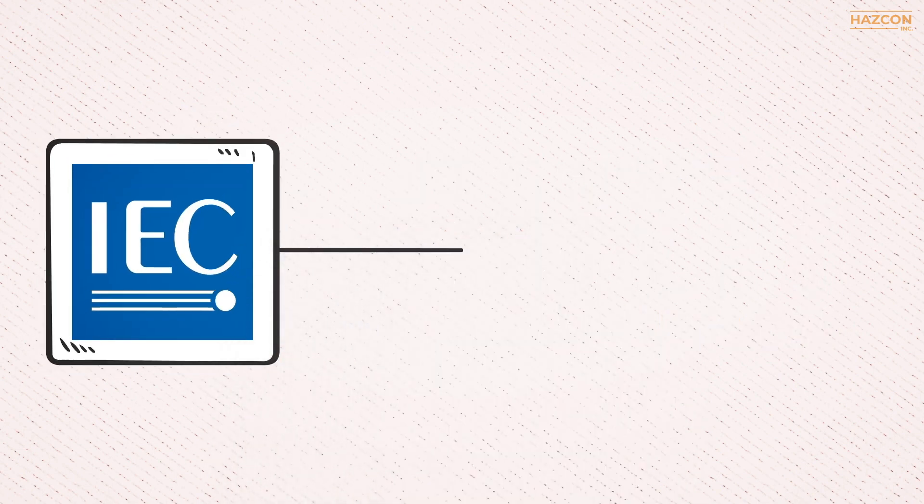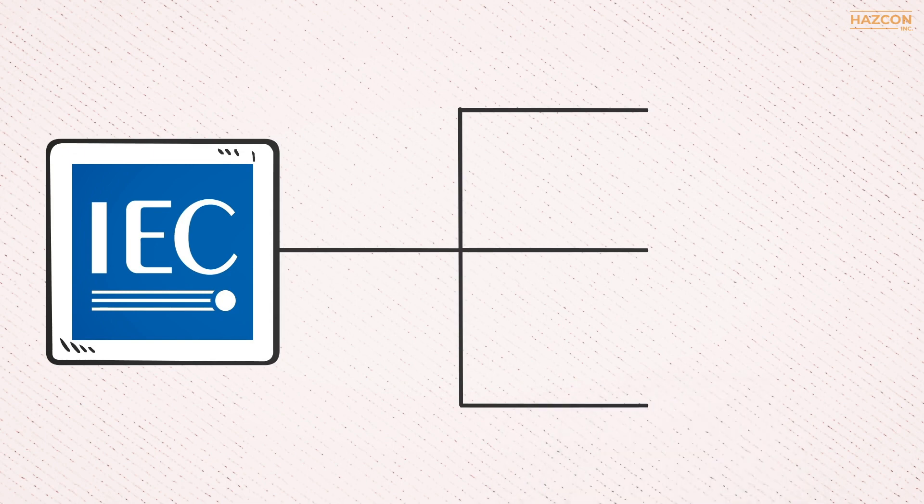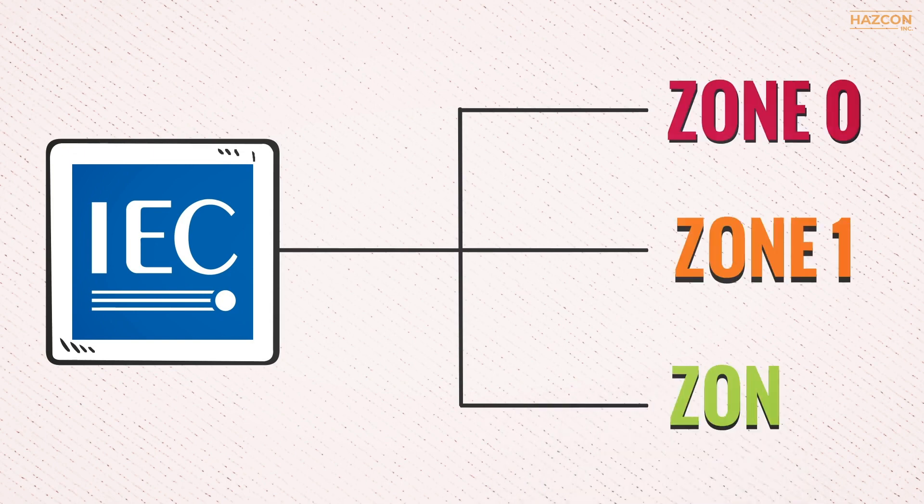As per IEC standards, the classified areas are categorized in three groups: Zone 0, Zone 1, and Zone 2.